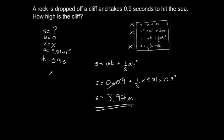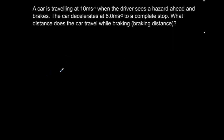Let's try a slightly more difficult example. This time we have a car travelling at 10 metres per second and the driver sees a hazard ahead and brakes. The car decelerates at 6 metres per second squared to a complete stop. What distance does the car travel while braking? In other words, the braking distance of the car.